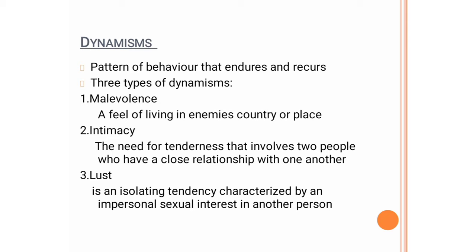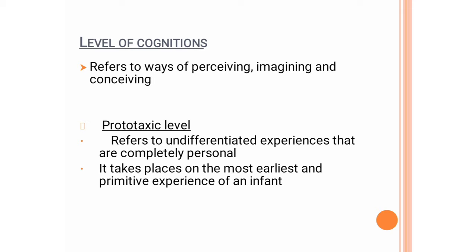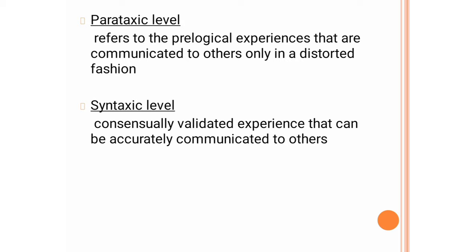Next is the levels of cognition, which refers to perceiving, imagining, and conceiving. This happens in the development of the child. The first level is the prototaxic level, referring to undifferentiated experience — completely personal, taking place at the most earliest and primitive experience of an infant. The next level is the parataxic level, referring to pre-logical experiences that are communicated to others only in a distorted fashion. The next is the syntaxic level — consensually validated experiences that can be accurately communicated to others.